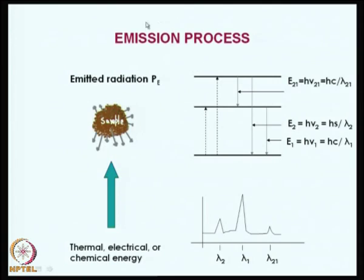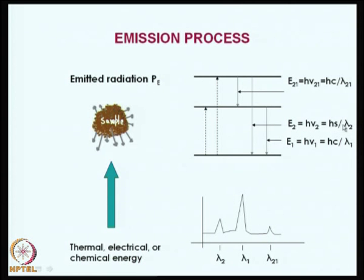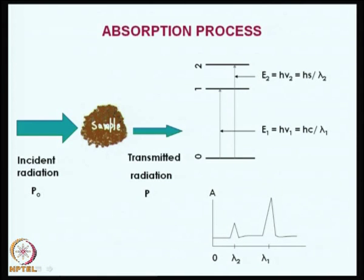For example, in an emission process, I have a sample and I give a stimulus — it may be thermal, electrical, or chemical energy. The energy levels give E₁ = hμ₁ = hc/λ₁, E₂ = hμ₂ = hc/λ₂, and E₂₁ = hμ₂₁ = hc/λ₂₁. These are the different wavelengths coming out of the system.